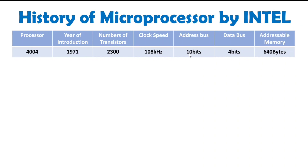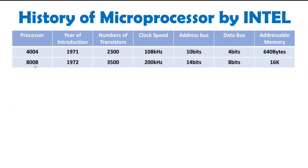The 4004 had 10 bits of address and 4 bits of data, with a total addressable memory of 640 bytes. After that, the 8008 processor was designed by Intel and introduced in 1972 with 3,500 transistors. The clock speed was 200 kilohertz, with a 14-bit address bus and 8-bit data bus. With 14 bits of address, it could address 16 kilobytes of memory.